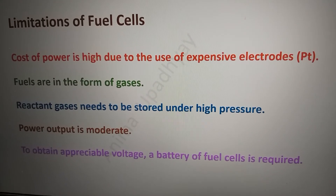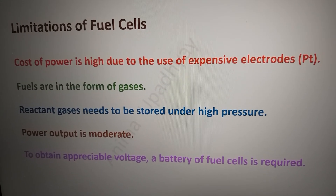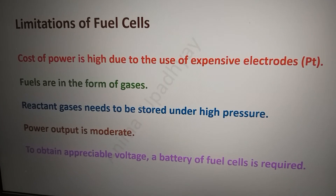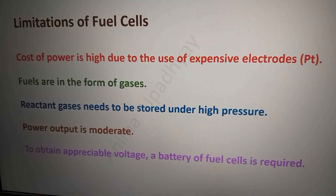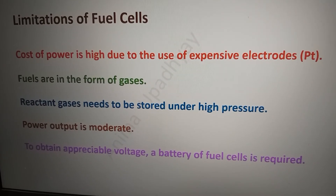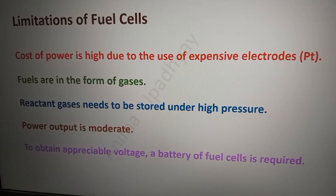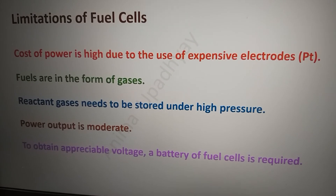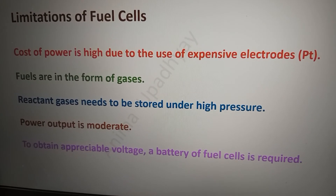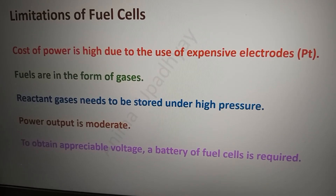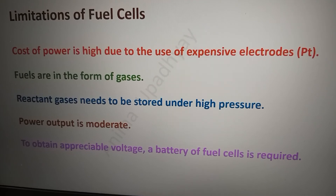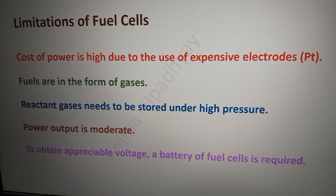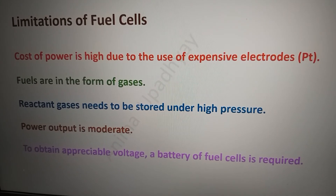There are also a few limitations of fuel cells. The cost of power is very high because expensive electrode materials such as platinum, ruthenium, and rare earths are used. The fuels are in the form of gases, so their storage is a matter of concern — hydrogen is stored under high pressure, and the same is the case for methanol. Power output is moderate, and to obtain a desirable voltage, a battery of fuel cells is required.